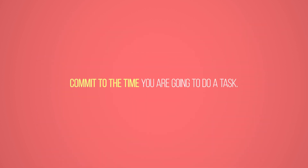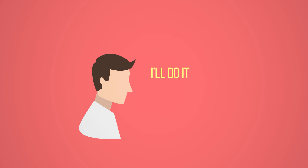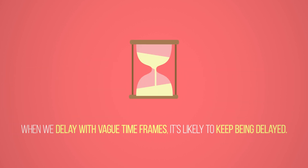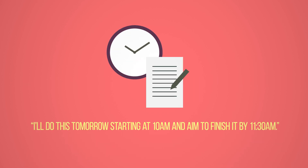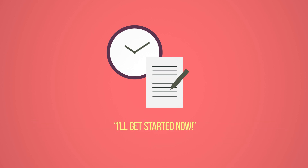Commit to the specific time you are going to do a task. Don't think 'I'll do it later,' or 'sometime this week,' or 'tomorrow,' or 'tonight.' When we delay with vague timeframes, it's likely to keep being delayed. We're more likely to get it done with a specific timeframe in mind — for example, 'I'll do this tomorrow, starting at 10am and aim to finish it by 11.30am.' Best of all is 'I'll get it started now.'